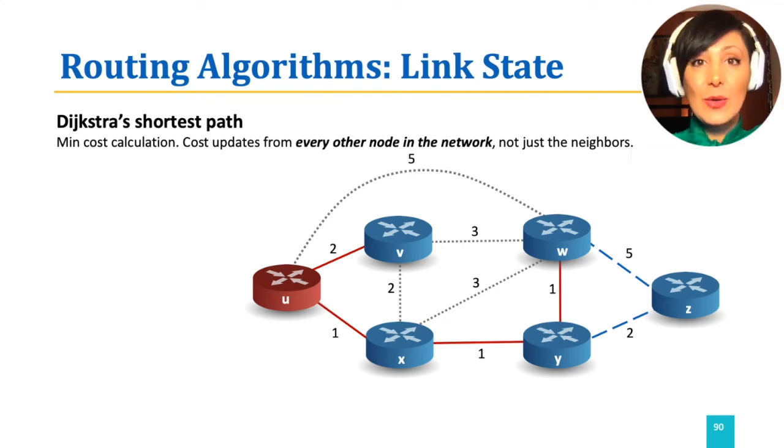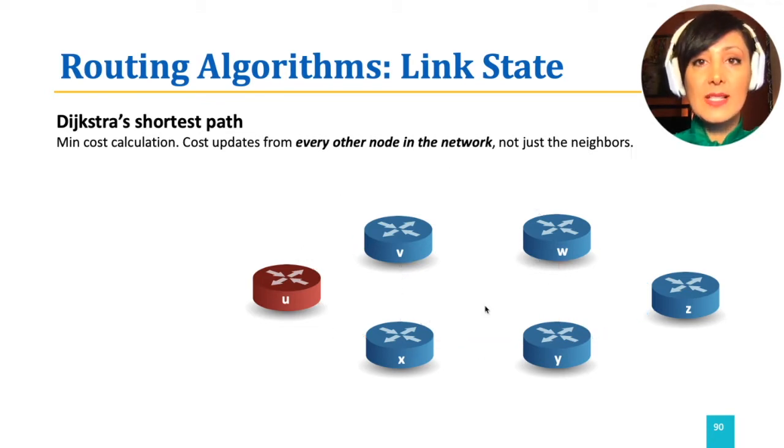Let's examine Dijkstra's algorithm through our same example. At the initiation step of the algorithm, node U will only update the cost to its direct neighbors. X, V, and W would cost 1, 2, and 5.